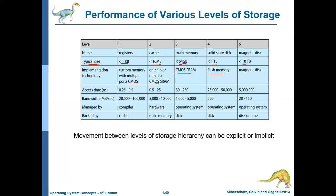Registers, main memory, and cache memory are all one or another form of CMOS technology. As for access time, devices higher in the hierarchy can be accessed at a much faster rate. Registers can be accessed within 0.25 to 0.5 nanoseconds, cache memory from 0.5 to 25 nanoseconds, and main memory contents between 80 to 250 nanoseconds. Solid state disks take 25,000 to 50,000 nanoseconds, and magnetic disks even more.